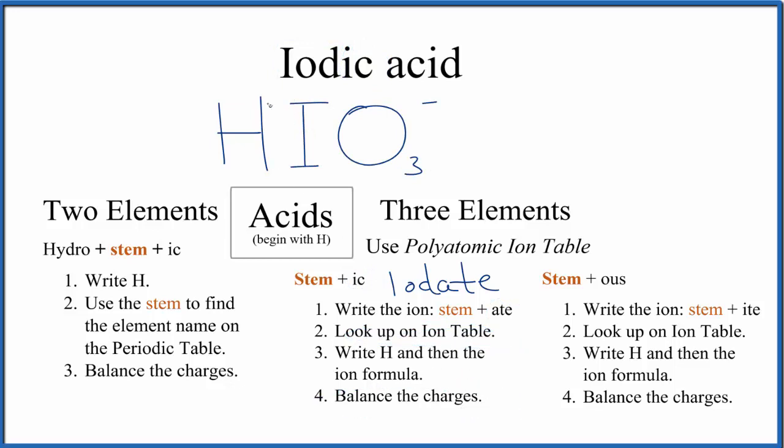Hydrogen on the periodic table is in group one, so that's going to be one plus. We know that the iodate ion, the whole thing here, is one minus. So the plus and the minus, they balance out, and this is the formula for iodic acid, HIO3.